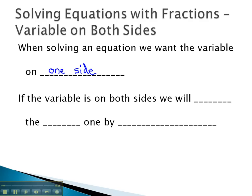If the variable is on both sides, we can't move away from it, so what we will do is we will move the small one by either adding or subtracting that term from both sides of the equation.